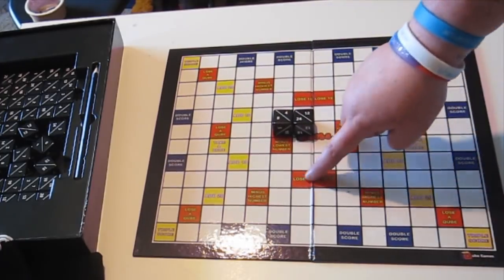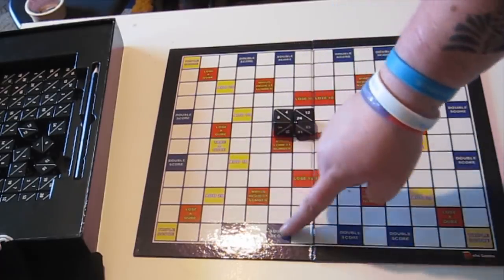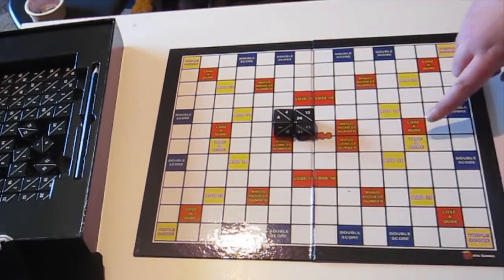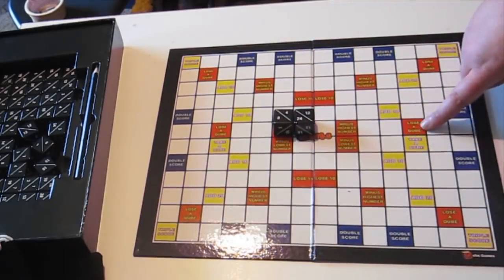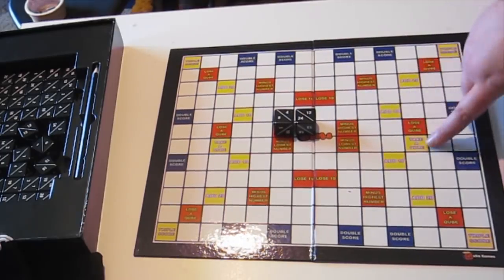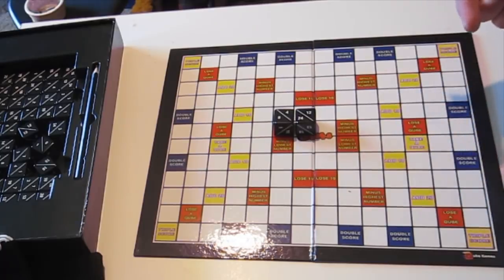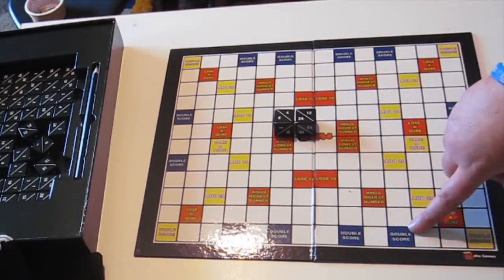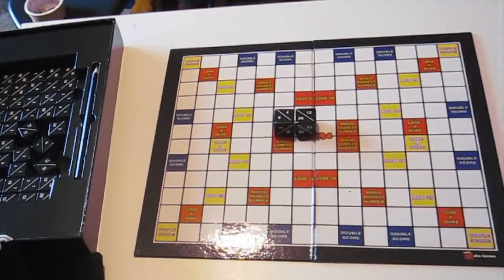So you want to try and avoid the red ones, you want to try and hit the yellow and blue. The lose cube means another player loses a cube I believe. If you get a yellow, so for example add 10 or take a cube, pretty self-explanatory. Triple score you triple the final score, double score you double the final score, pretty simple.